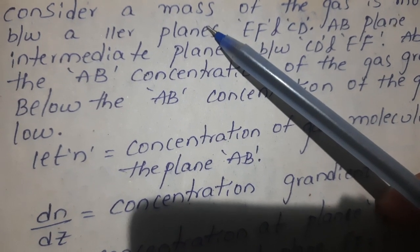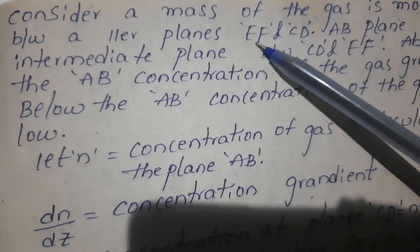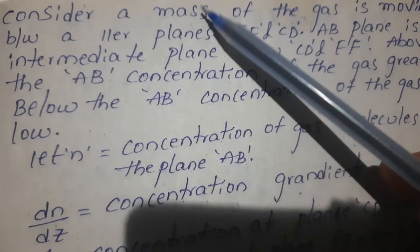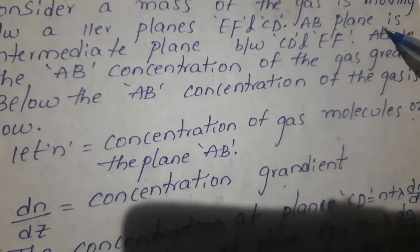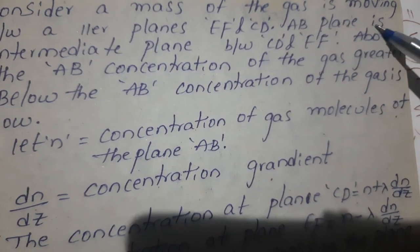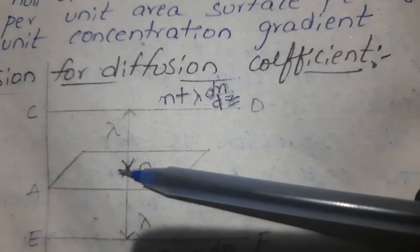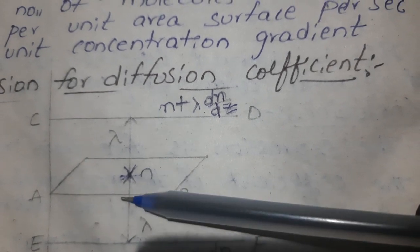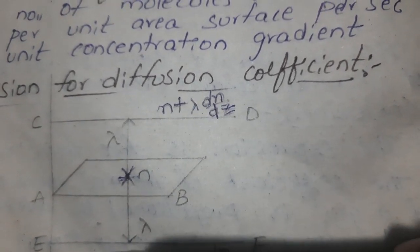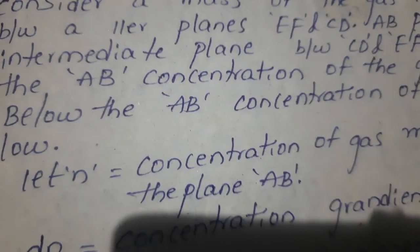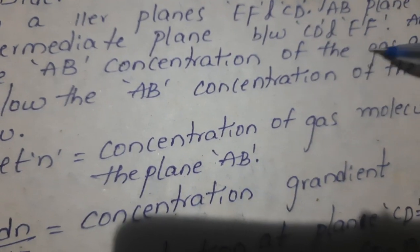Now we are going to consider the upper layer CD and lower layer EF. These are two parallel planes. AB is an intermediate plane between CD and EF.